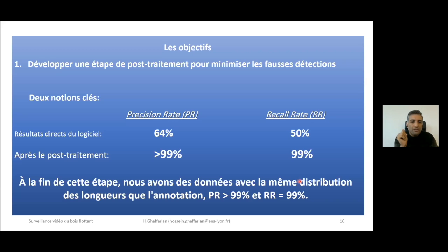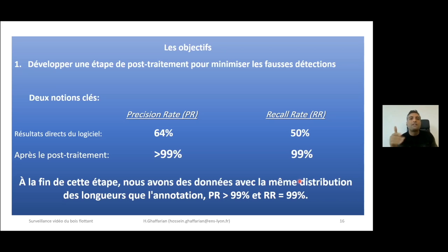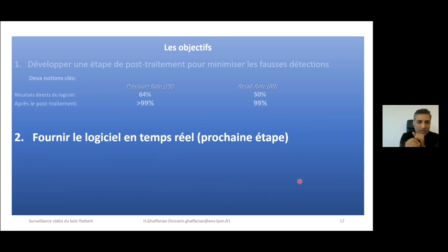For the first objective, we developed a post-treatment step to increase both precision and recall rate. When I say 99%, that is actually huge. From all 14 years of data, I extracted 4,000 true positives and 4,000 false positives — 8,000 total — randomly checked them, and confirmed that after all these steps we have 99% precision and recall rate. We now have detections with the same length distribution as observed on the river, with very high precision and recall.